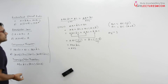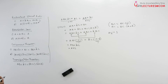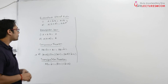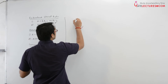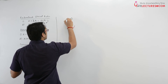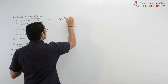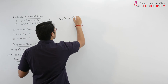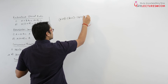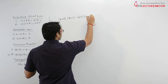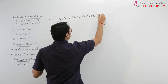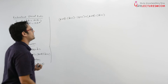This equals the right-hand side, hence the consensus theorem is proved. Now this next form is the dual form of the consensus theorem: A plus B dot A complement plus C dot B plus C equals A plus B dot A complement plus C.